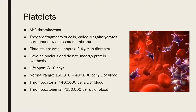Platelets are small, approximately two to four micrometers in diameter. As they are not cells, they have no nucleus and do not undergo protein synthesis. They have a lifespan of about eight to ten days. The normal range of platelets is between 150,000 to 400,000 per microlitre of blood. More than this range means a person has thrombocytosis, while less than 150,000 per microlitre means the person has thrombocytopenia.